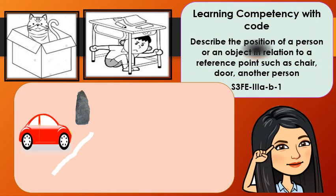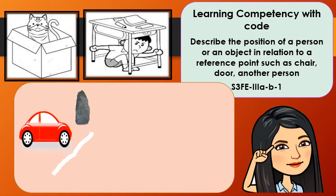Learning competency with code: Describe the position of a person or an object in relation to a reference point such as a chair, door, or another person.